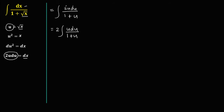To solve this integral, we need to rewrite the equation first. Since x is the same as x plus 1 minus 1 (because 1 minus 1 equals 0), therefore u is the same as u plus 1 minus 1, over 1 plus u, then du.